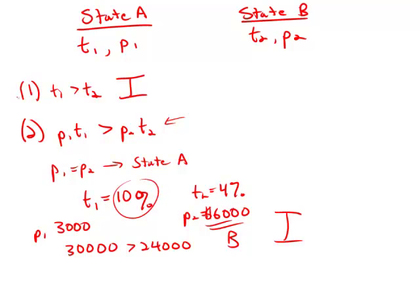We do have the fact that T1 is bigger than T2. And we also have the fact that P1T1 is bigger than P2T2. But it turns out that it would still be more expensive to buy in B.